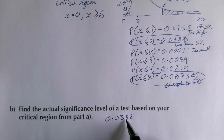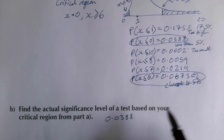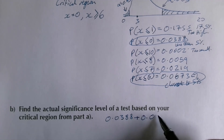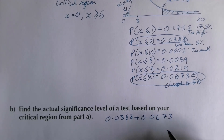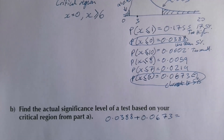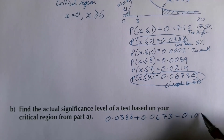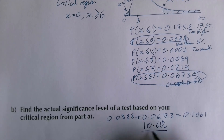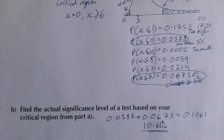One end is nearly 4% and the other nearly 7%, so we expect something close to 10%. Adding 0.0388 + 0.0673 = 0.1061, so the actual significance level is 10.61%, or 10.6% to three significant figures.